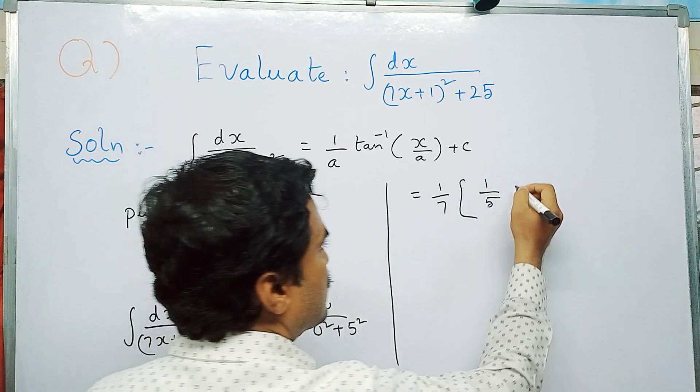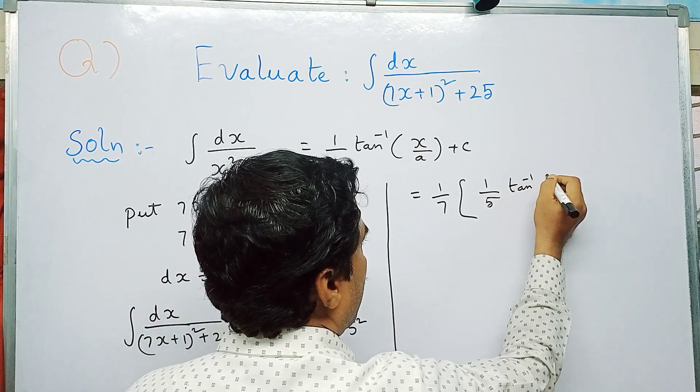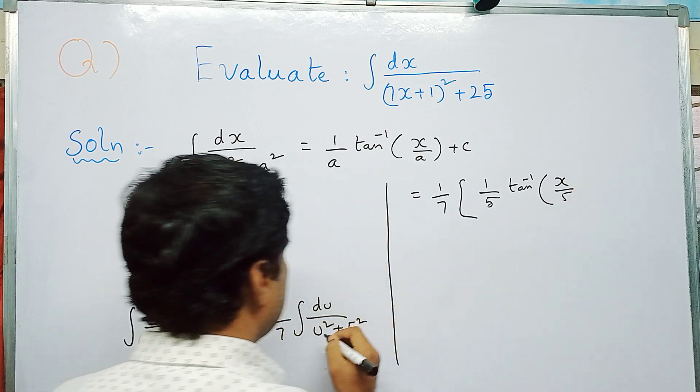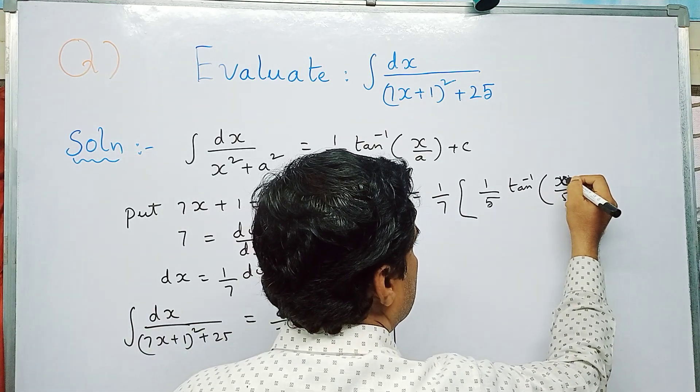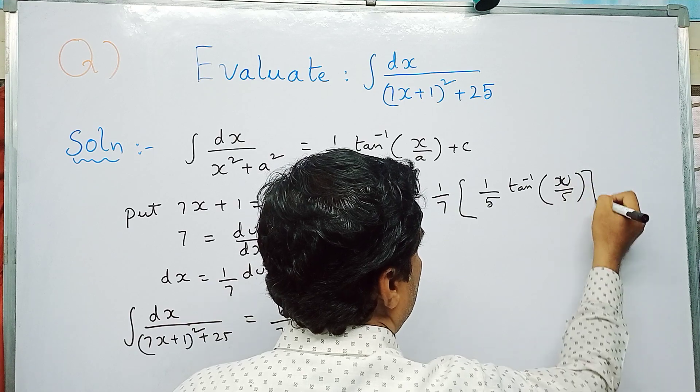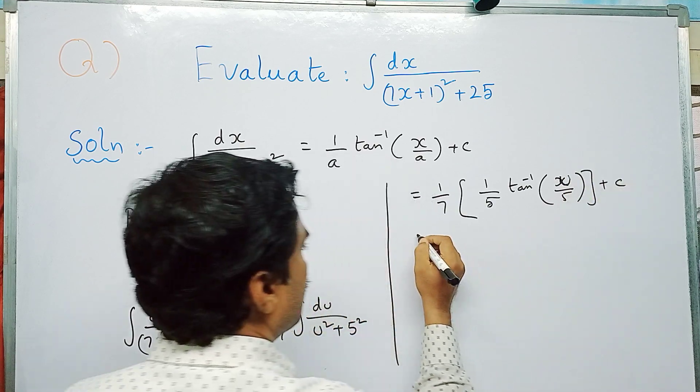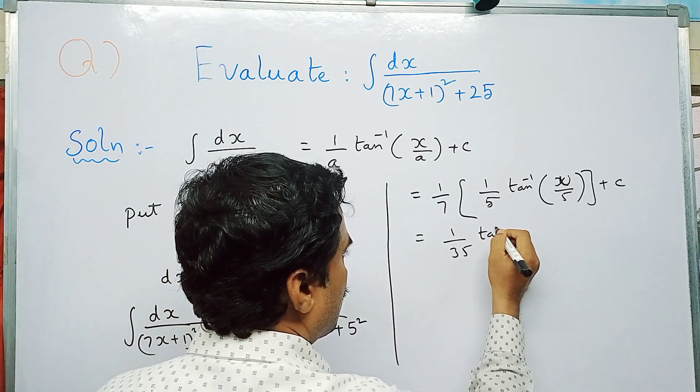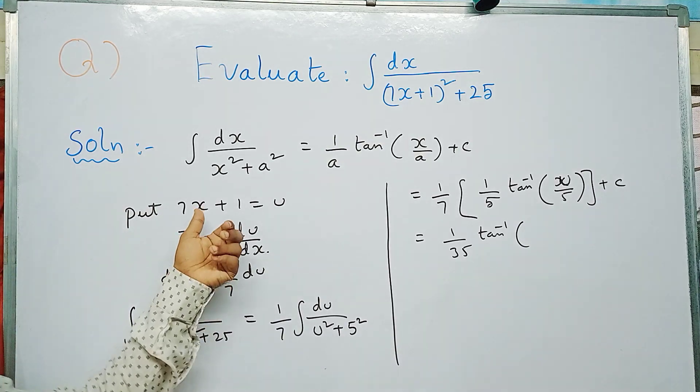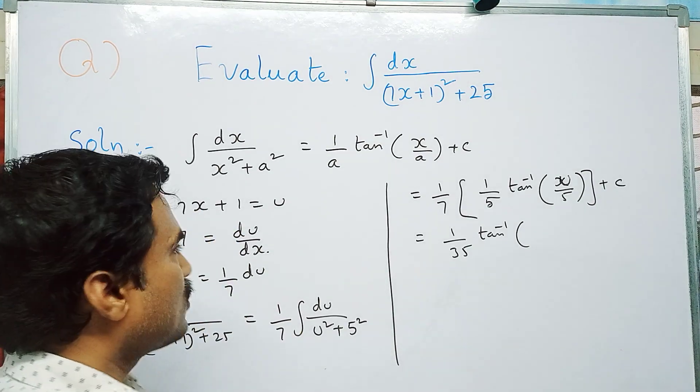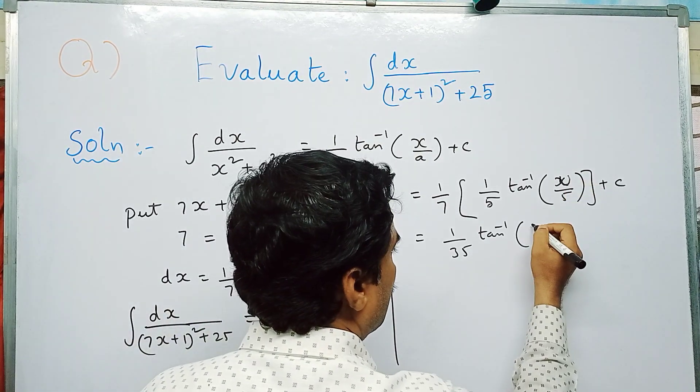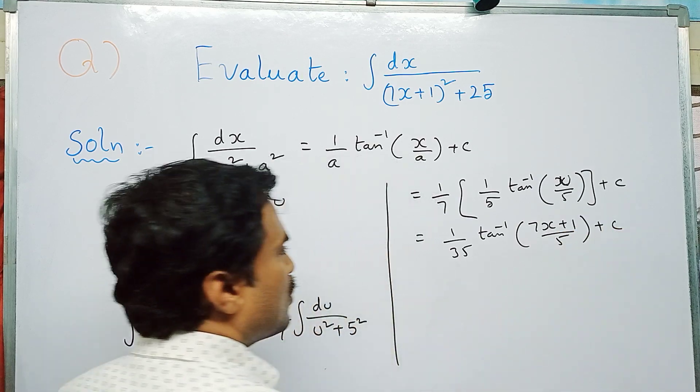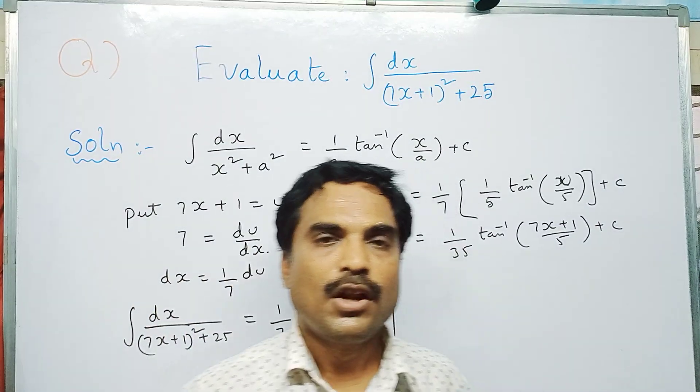Here x is u, so replace this x by u. Now we have to replace u by 7x plus 1 that we had taken. So in place of u, put 7x plus 1 by 5 plus c. The final solution is 1 by 35 tan inverse of (7x + 1)/5 plus c. This is the final solution for the above problem.